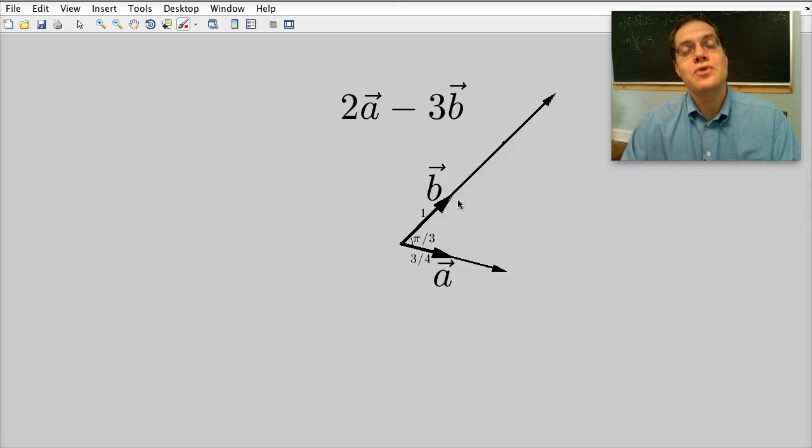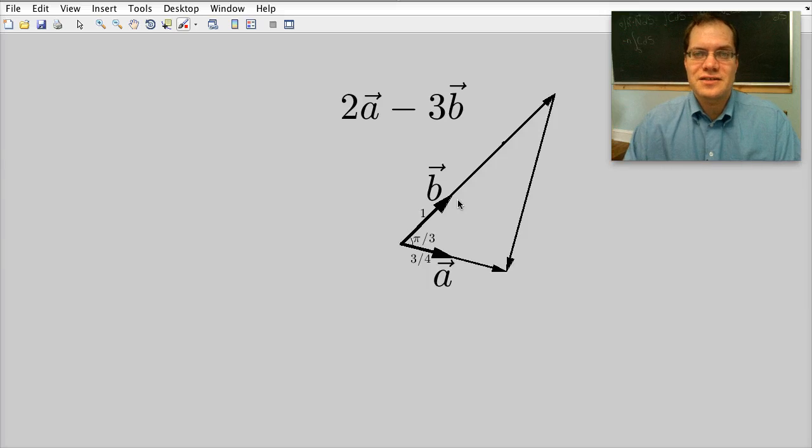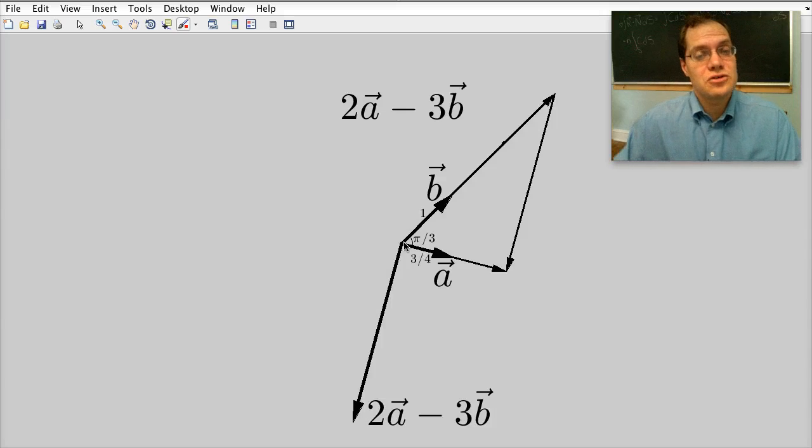So now 2a minus 3b is very easy to visualize. It's the vector connecting the tip of 3b with the tip of 2a. It would be more proper to have this vector starting at the origin. So the final answer, 2a minus 3b, is this vector. Because we're dealing with pictures, your answer could simply be it's this vector. But we have more information so we can make our answer more specific.